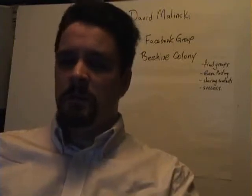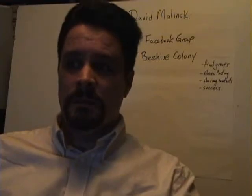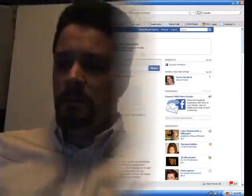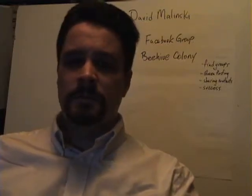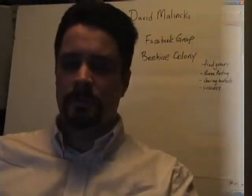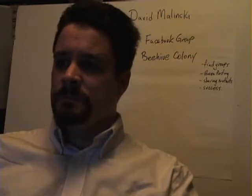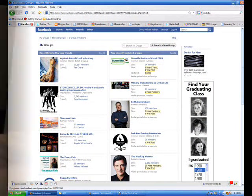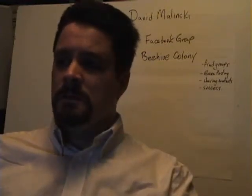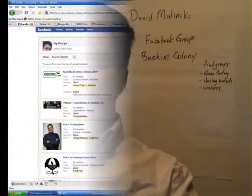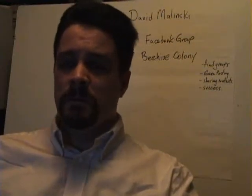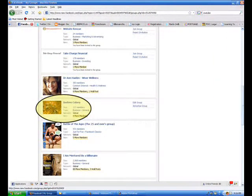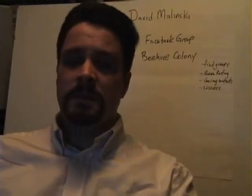First off, we're going to take a look at — after you've become a member of the group — finding the group later when it's not showing up in your highlights bar. You can always go to groups within your own Facebook page by looking down on the bottom left corner. Click on the little two-people shaded group symbol, and then you'll see a list of all of your individual groups. If you're not seeing the Beehive Colony Group right away, click on your recently updated groups and 'See All,' then scroll down. You should find it fairly easily. You can either click on the name of the Beehive Colony Group or the picture of the bees working away on their beehive. That will take you to the Beehive Colony page.